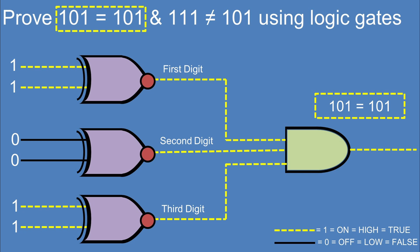We can see here that when we feed in the 101 and the 101 into the inputs, the first digit, the second digit, and the third digit not-exclusive ORs report out that all these digits are the same. So the exclusive ORs report a true signal into the inputs of the AND gate. And being that all of them are on, the AND gate reports out a 1, which is true that 101 equals 101.